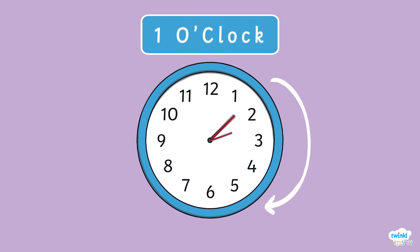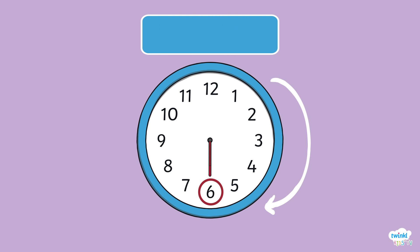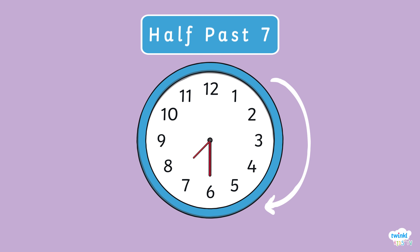But when the minute hand, the bigger hand, gets to the number 6, then we say half past. You can see that when the minute hand is pointing to the 6 and our hand is pointing to the number 7, we say the time is half past 7.